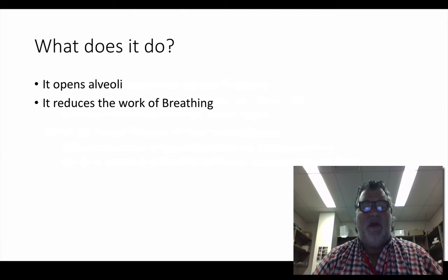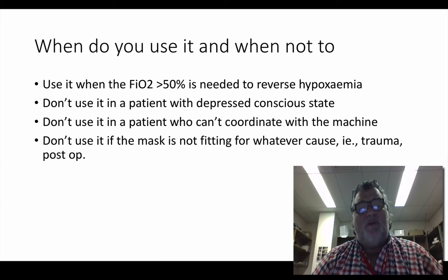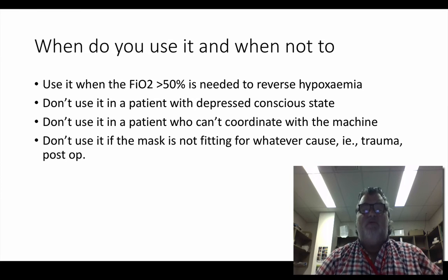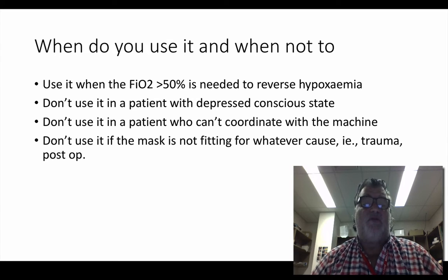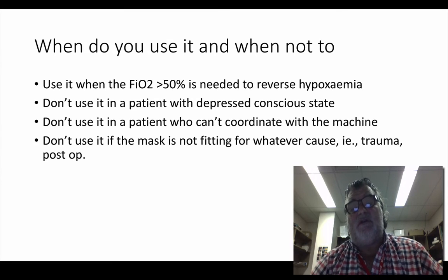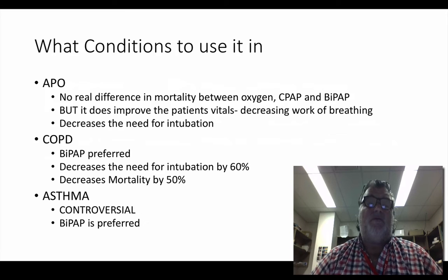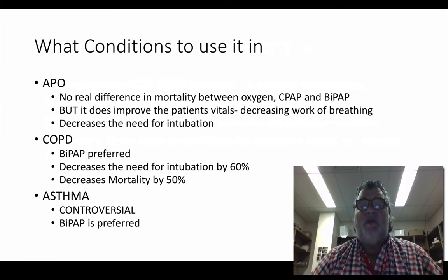What does it do? Well, it opens the alveoli and reduces the work of breathing in its most basic form. When do you use it and when not to use it? We tend to bring it in when an FIO2 of greater than 50% is required to reverse hypoxemia. We don't use it in patients that can't comply with a mask, have a depressed conscious state, or can't have a mask fitted — such as trauma patients or those who've had a recent post-operative procedure. The conditions we tend to use it in are APO, acute pulmonary edema, and COPD.